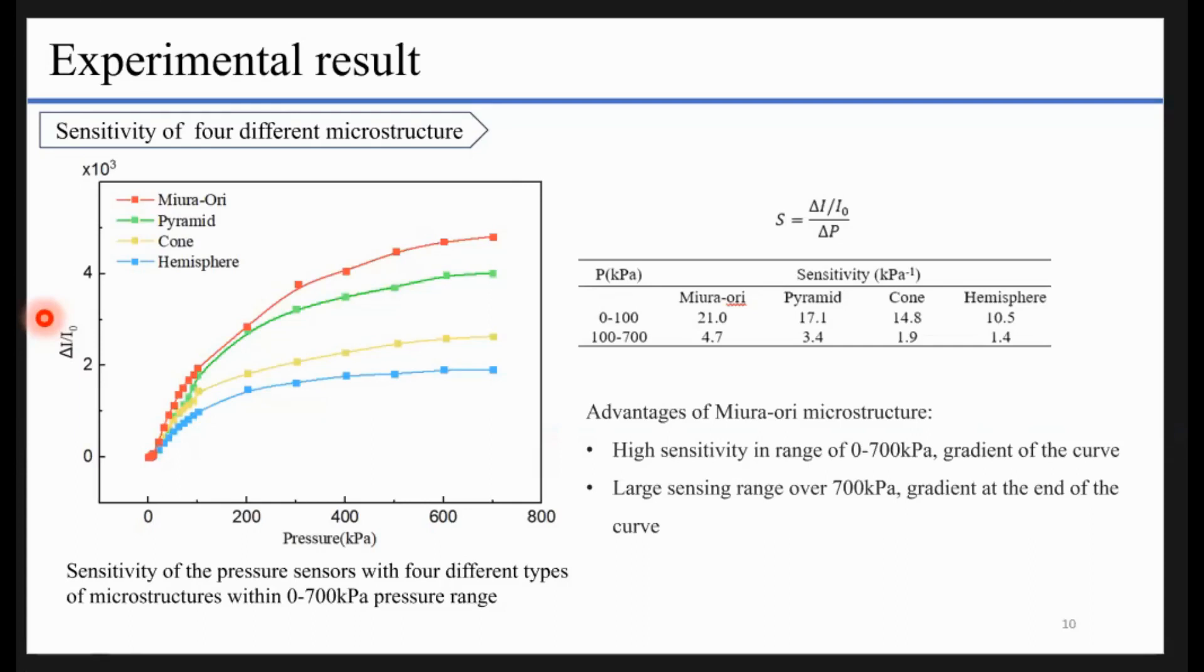From the figure, we can see that the Miura array, which is the red one, shows the best sensitivity in the range of 0 to 700 kPa. One more thing we need to pay attention is that the red line is still going up, but the others tend to be going flat, which means the Miura array may have a wider sensing range, but our equipment can only apply pressure to 700, so we cannot test this.